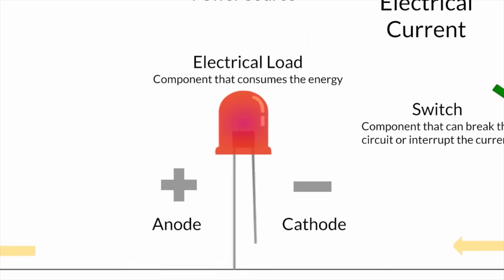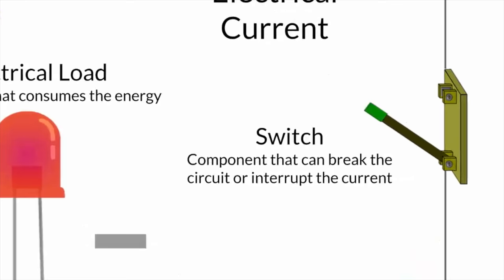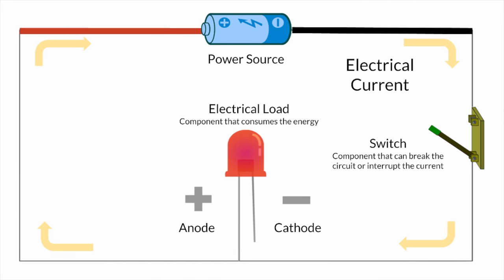After the electrical current passes through the load, it heads over to the positive end of the battery. We will use red wires for this path. In this diagram there is a switch that breaks the circuit or interrupts the current. In our device, we will be using the buttons instead of a switch.